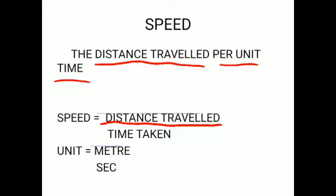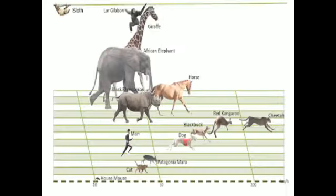The SI unit of length is meter and time is second, so the unit of speed is meter per second. Now we see that animals move with different speeds around us.